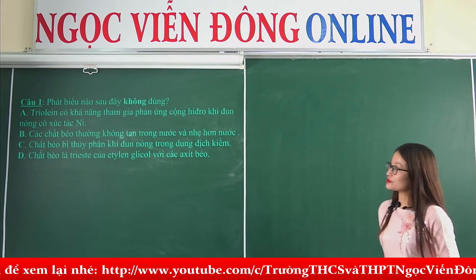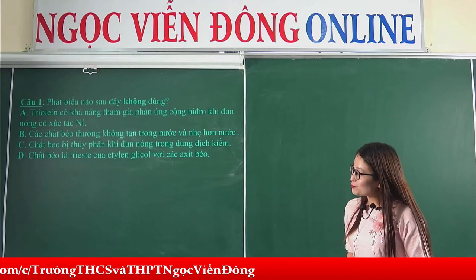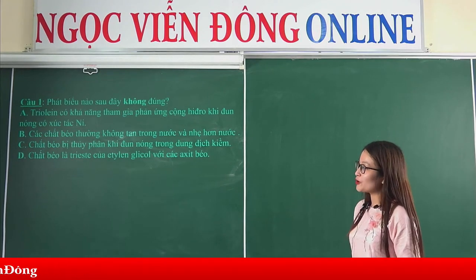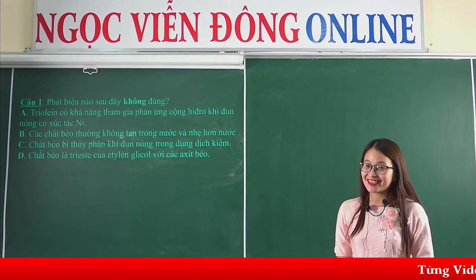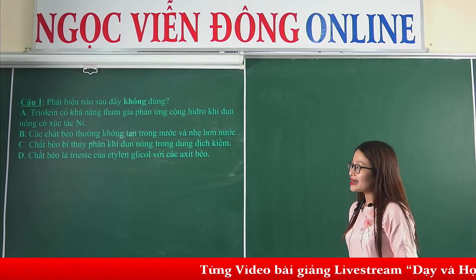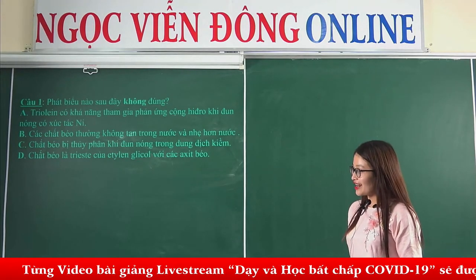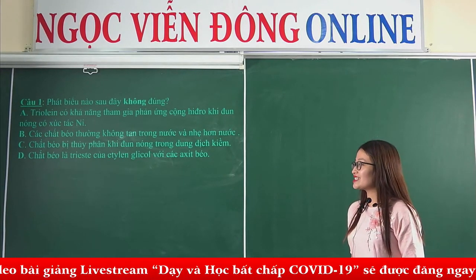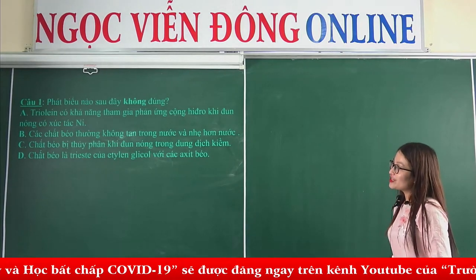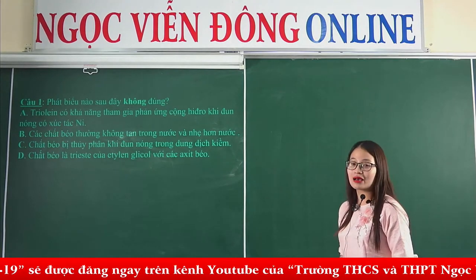Bây giờ câu hỏi số 1. Đây là một câu hỏi về lý thuyết. Phát biểu nào sau đây không đúng? Đáp án A: triolene có khả năng tham gia phản ứng cộng hydrogen khi đun nóng có xúc tác niken. Đáp án B: chất béo thường không tan trong nước và nhẹ hơn nước. Đáp án C: chất béo bị thủy phân khi đun nóng trong dung dịch kiềm. Đáp án D: chất béo là este của ethylene glycol với các acid béo. Đối với câu hỏi này nếu các bạn nắm rõ lý thuyết thì các bạn sẽ đánh rất nhanh, đọc qua là biết câu nào đúng rồi.